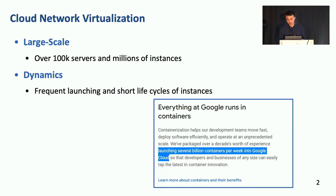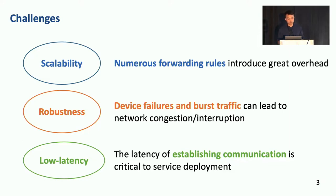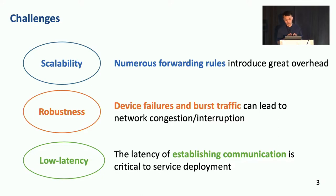There are two trends making cloud network virtualization more challenging. First, cloud scale is getting larger — some data centers can hold more than 100,000 servers and millions of VM instances. Second, as cloud computing is getting widely used, it's getting more dynamic; instances are launched and stopped frequently. This brings three requirements: scalability, as growing instances require many forwarding rules; robustness, as device failures and burst traffic can cause congestion or interruption; and low latency for establishing communications.